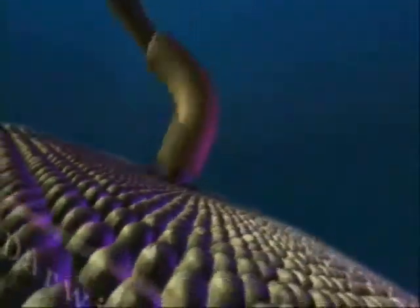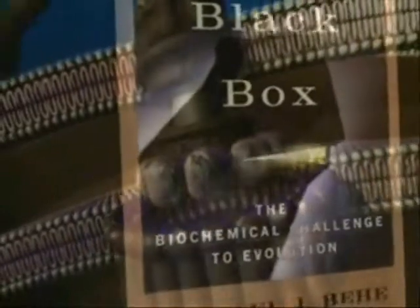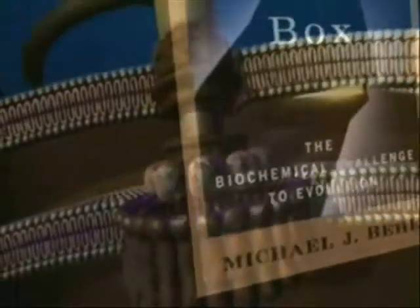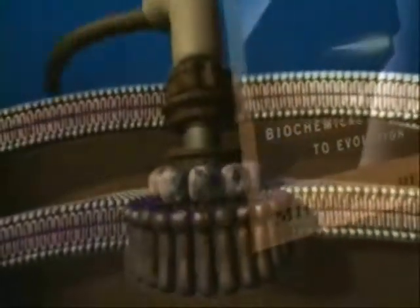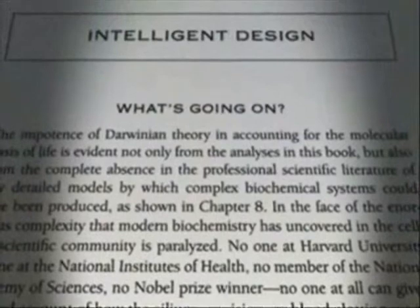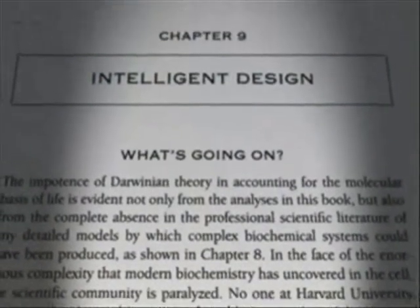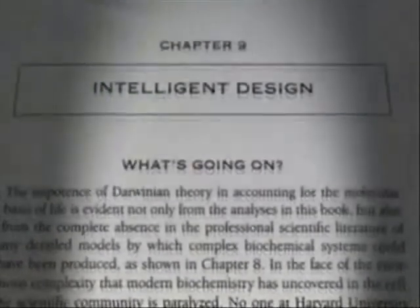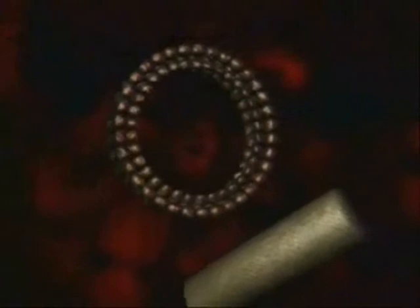In 1996, Michael Behe published a book titled Darwin's Black Box. In it, he argued that natural selection — Darwin's designer substitute — could not explain the origin of the bacterial flagellum or any other irreducibly complex biological system. Instead, Behe concluded that the integrated complexity of these systems pointed to intelligent design.